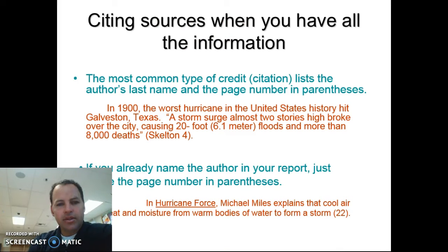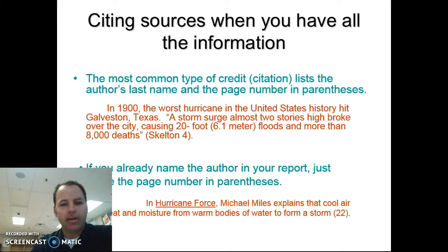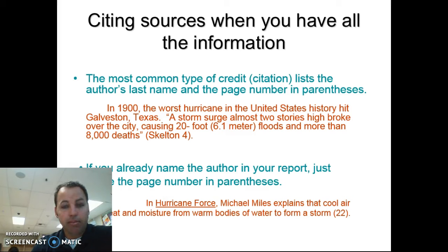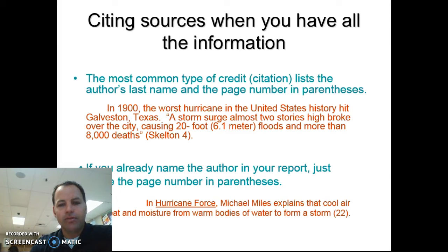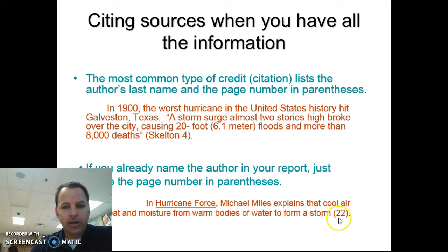As you grow as a writer in Mr. Krauss's class, if you mention the author in the context — good job. But that means you've already mentioned the author, so you don't need to put it in the parenthetical citation. For example: In Hurricane Force — that's a book — Michael Miles explains that cool air draws heat and moisture from warm bodies of water to form a storm. I did not tell you the page number in the sentence, so I gave it as a parenthetical citation — it must have occurred on page 22. Since I didn't quote it, I must be paraphrasing his original words, but I still have to give credit where credit is due.